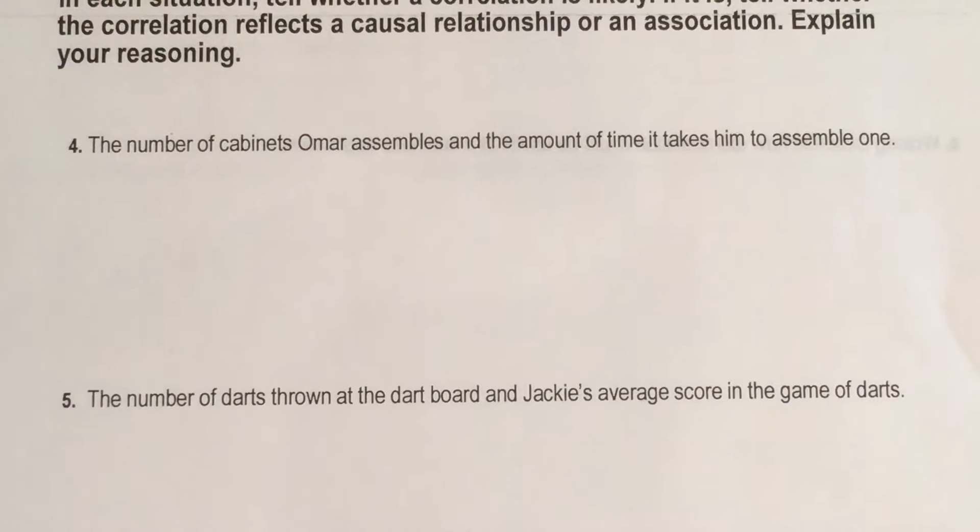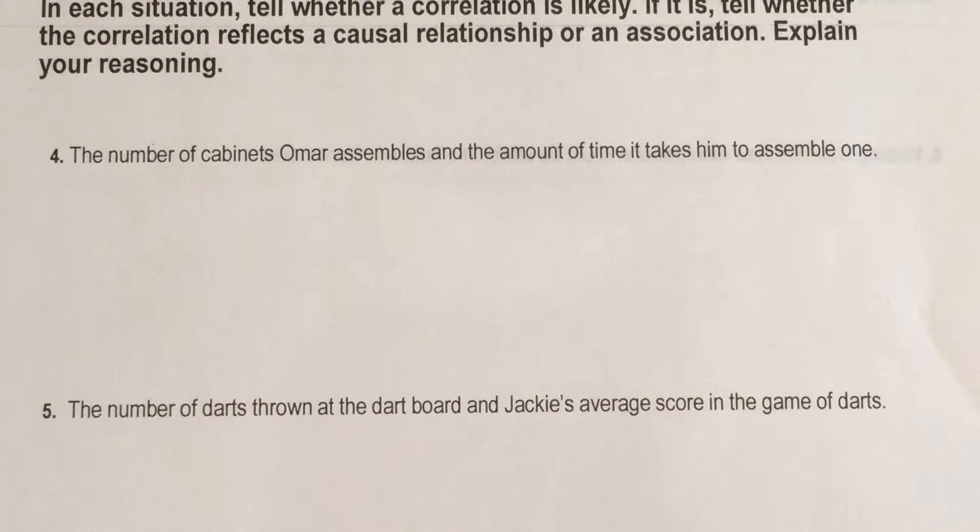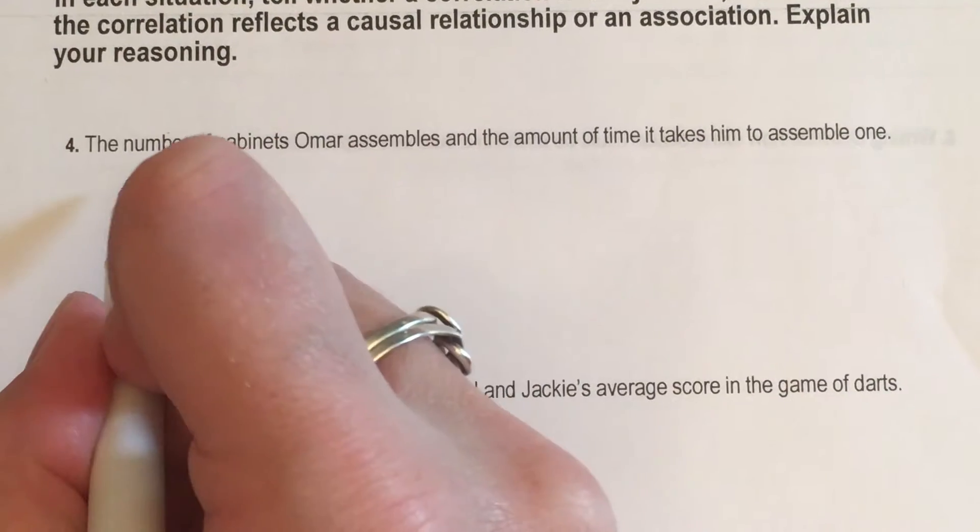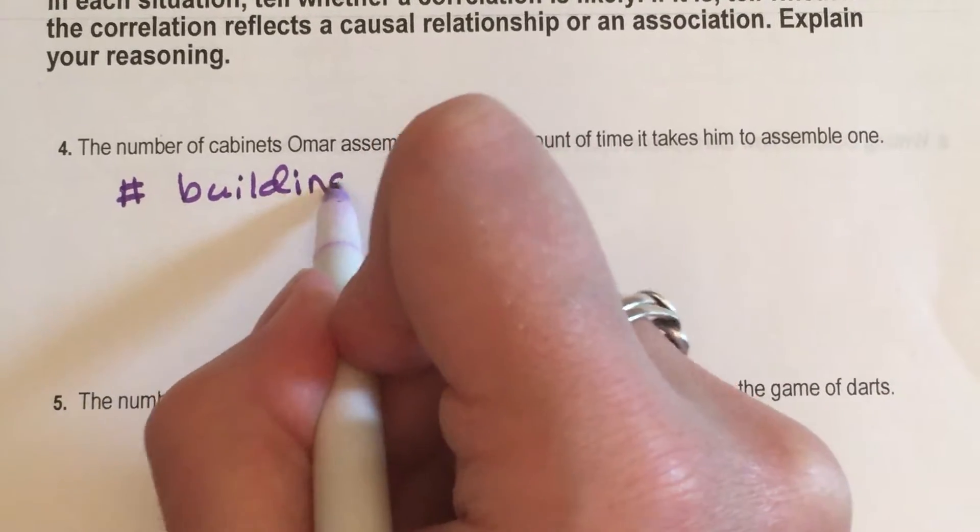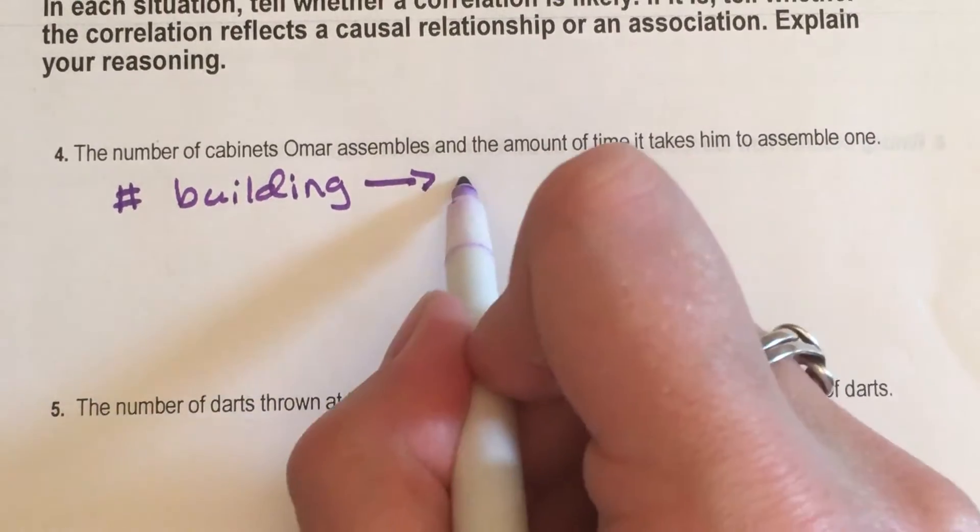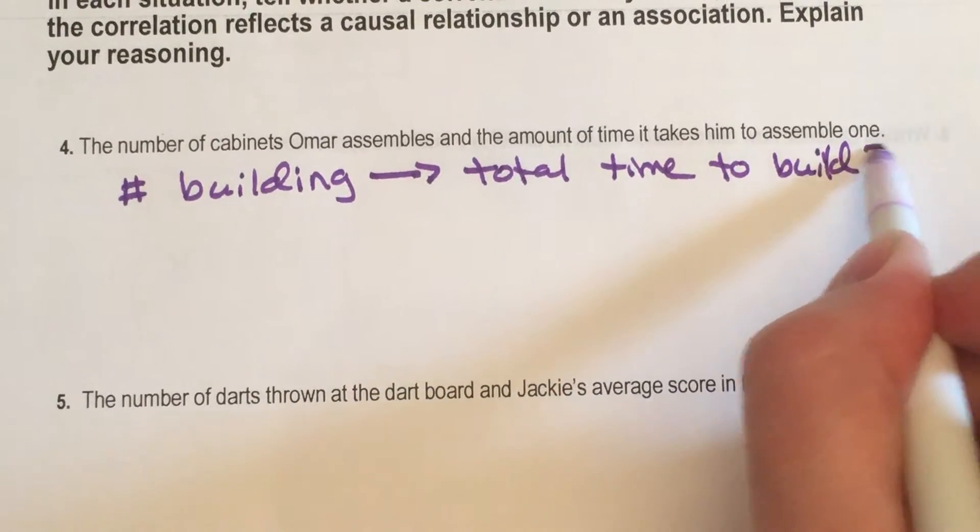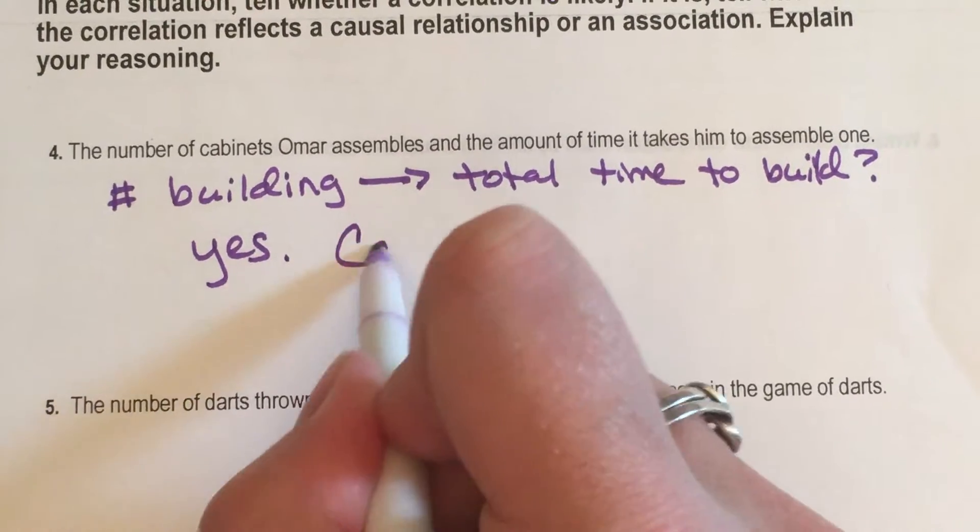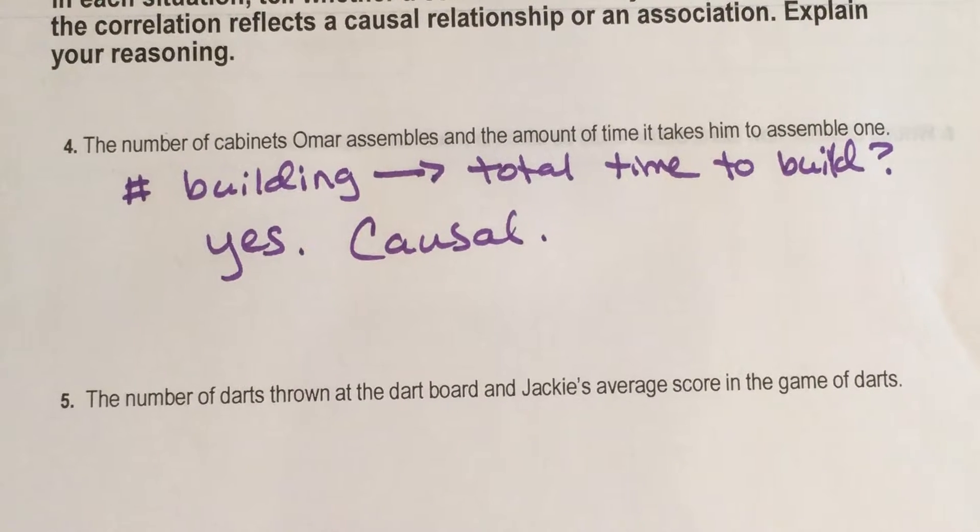The number of cabinets that Omar assembles and the amount of time that it takes him to assemble one. So does building them cause the amount of time to change as he builds them? That is not a hashtag. That is a number sign. The number that you have to build. The number building, does it have a cause and effect relationship with the total time? There is a spelling of build. Yes. Yeah. The more you build, the more time it is going to take you to build them. This is causal. There is a direct cause and effect relationship there. Time working, the number built, yes.